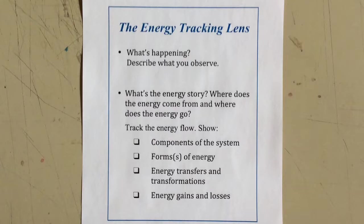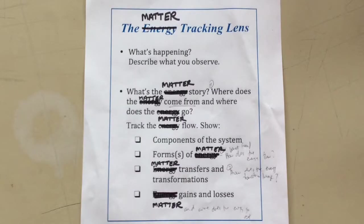In the previous day's lesson you used the energy tracking lens and asked the questions: where does the energy come from and where does the energy go? In today's lesson you'll be using the same exact lens, except we'll be calling it the matter tracking lens, asking the same questions but about matter and the flow of matter in the ecosystem model.